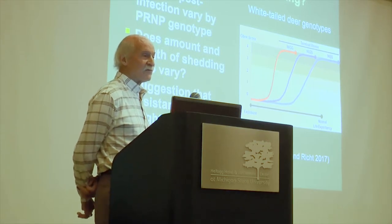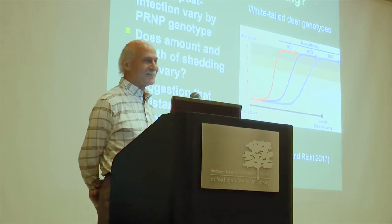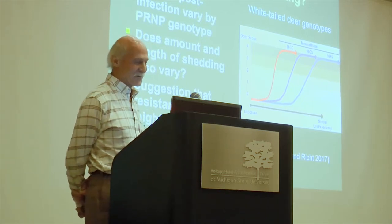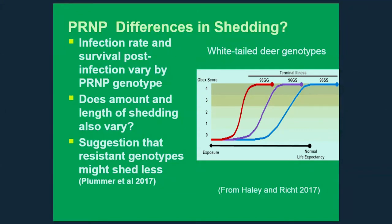Here's a graph illustrating the three common genotypes in white-tailed deer. The 96GG genotype is typically the first to get infected, most likely to get infected, and has the shortest disease course — typically 18 to 24 months. The GS genotype has a lower probability of infection and the disease seems to last a bit longer. The SS genotype is pretty rare, but conceptually we think they're even less susceptible to infection and have a longer disease period as well.